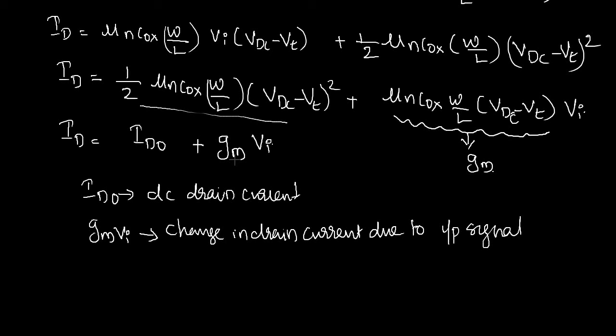According to the superposition principle, while performing DC analysis the AC signal is assumed to be zero, and when performing AC analysis the DC signal is assumed to be zero. So for our small signal analysis we consider only the AC component, that means Gm · Vi, which we consider as the drain current ID. In small signal approximation the change in drain current is linearly proportional to the input signal Vin, and in that case the MOSFET can be replaced by its small signal model.